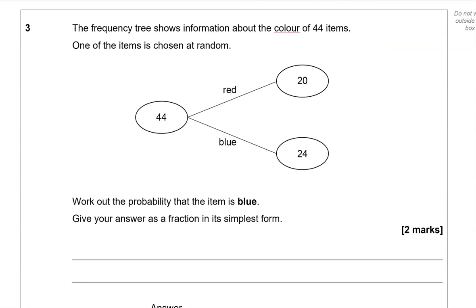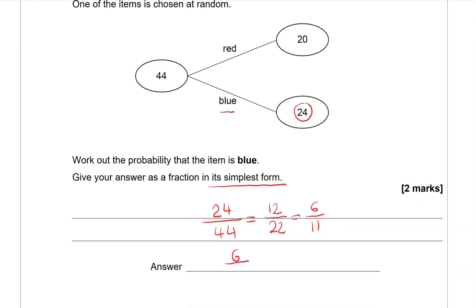The frequency tree shows information about the colour of 44 items. One of the items is chosen at random. Work out the probability that the item is blue. Give your answer as a fraction in its simplest form. So blue, we've got 24 of them out of the total which is 44. So as we've got to give it in its simplest form, I'm going to divide 24 and 44 by 2. So I get 12 and 22. I can still divide by 2. So I can go 6 over 11. Now I've got to a point where I can't cancel this any further, so I'm gonna leave it at 6 elevenths.